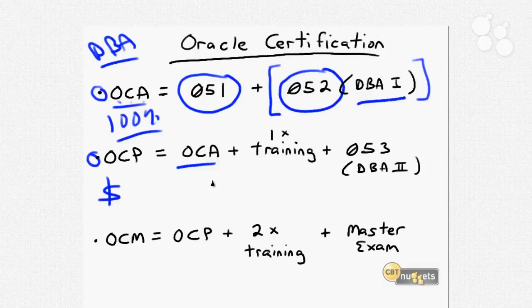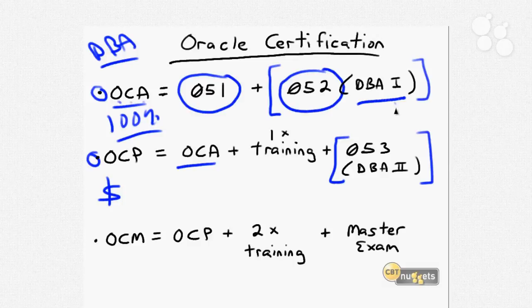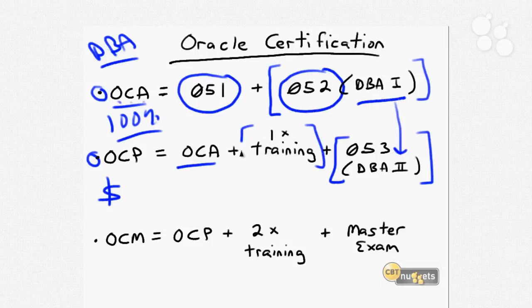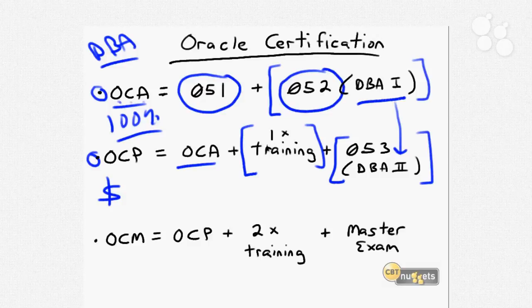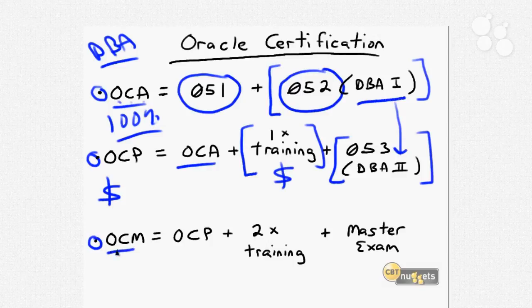If you decide to move to more lucrative waters certification-wise, the professional level title is called OCP, Oracle Certified Professional. The entry requirement is that you hold a valid OCA. Besides passing the 1Z0-053 exam, also called the DBA2 test, Oracle requires that you take a training course through them, an authorized instructor-led classroom course or online training course. That's extra money, unfortunately. Their top-tier credential is the Oracle Certified Master, or OCM.